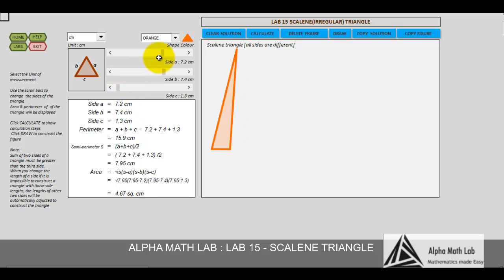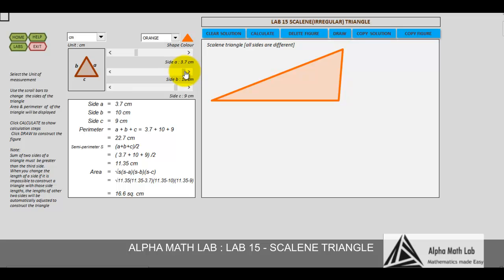Suppose we change the side length in such a way that it is impossible to construct a triangle, just like this case. So the third side or the other two sides are automatically adjusted to make the triangle construction possible. Let us move this side. Now when it reaches this right end, we can see that the other two slide bars are moving to make the triangle construction possible.